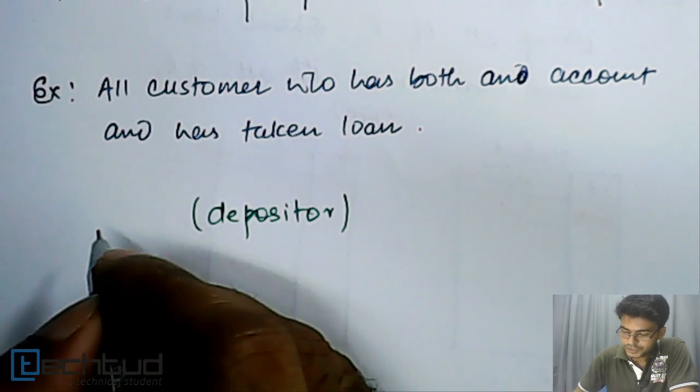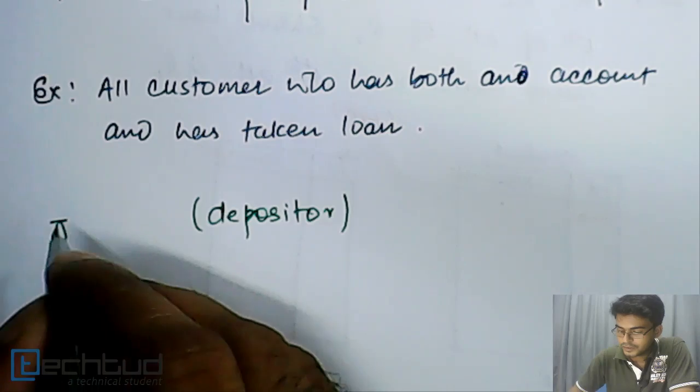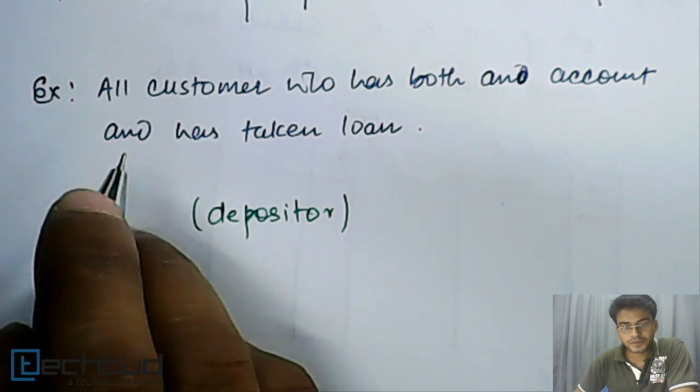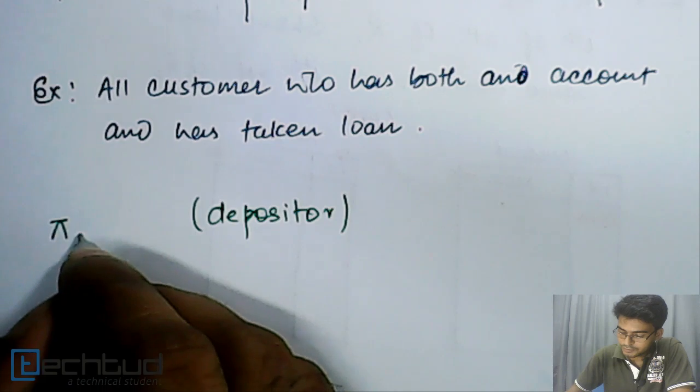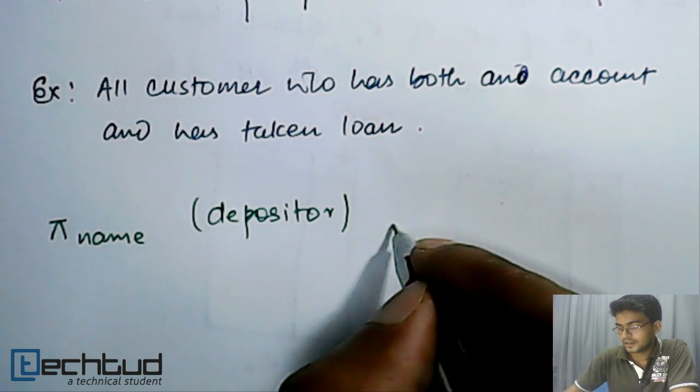From depositor, what we will do? We will project. If you remember, if we have to find out only the name attribute, then what we will do? We will project and we will just choose name, name, and then intersection...